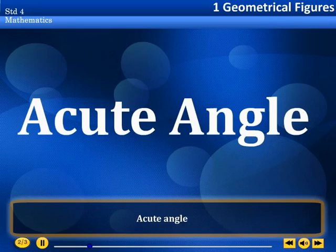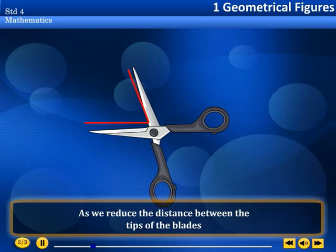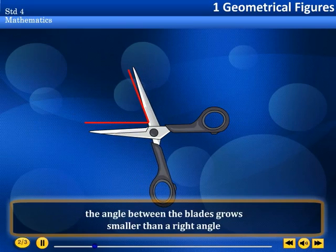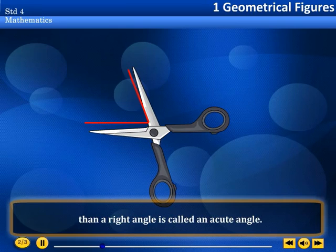Acute angle. As we reduce the distance between the tips of the blade, little by little, the angle between the blades grows smaller than a right angle. An angle which is smaller than a right angle is called an acute angle.